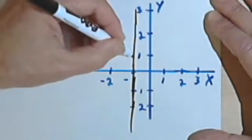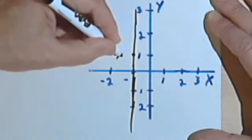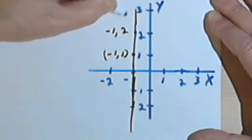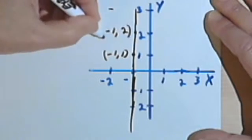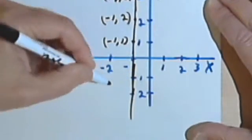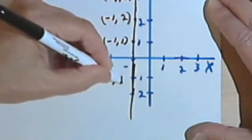And if I look at my ordered pairs, well, over here I've got negative 1 and 1. Over here I've got negative 1 and 2. Negative 1 and 3. Down below the x-axis I'm going to have negative 1, negative 1.